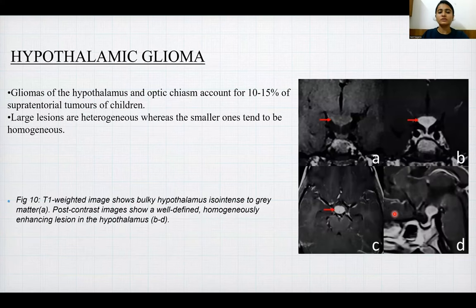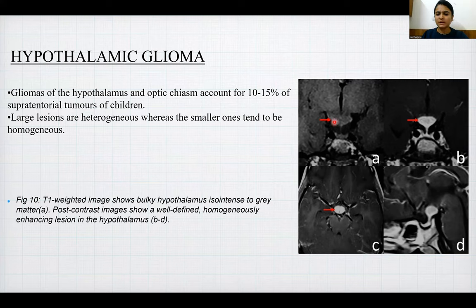Hypothalamic glioma: gliomas of the hypothalamus and optic chiasm account for 10–15% of supratentorial tumors in children. Large lesions are heterogeneous whereas smaller ones tend to be homogeneous. T1-weighted images show a bulky hypothalamus that is iso-intense to grey matter, and post-contrast images show a well-defined homogeneously enhancing lesion in the hypothalamus.